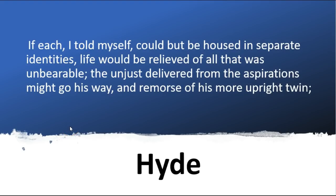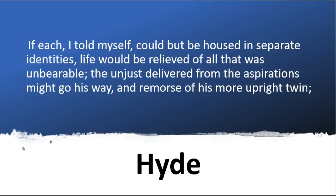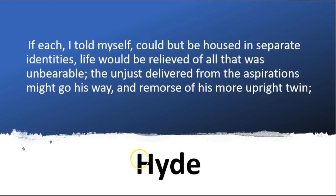Stevenson desperately wants us to make the connection between the house and the themes of duality, good and evil, and the dangers and positive aspects of science. He does this through the word 'housed.' Jekyll reflecting on the creation of Hyde says: 'If each, I told myself, could but be housed in separate identities, life would be relieved of all that was unbearable; the unjust might go his way, delivered from the aspirations and remorse of his more upright twin.' He imagines that creating Hyde would allow him to enjoy all that Hyde does while remaining a respectable figure — as Jekyll, he could argue he hadn't done anything; it was Hyde that did it.